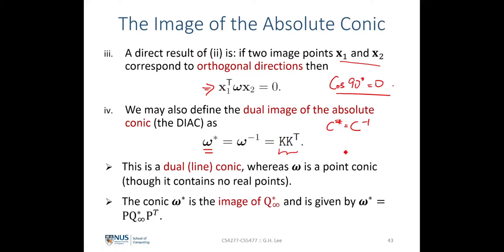The dual IAC omega-star = K*K-transpose follows the definition of the dual of a conic: the original conic is a point conic defined by points, while its dual is a conic defined by lines enveloping it. Although the IAC contains no real points and cannot be physically observed, the dual IAC omega-star is also equivalent to the image of the dual absolute conic Q-infinity-star on the plane at infinity, obtained directly by projecting that quadric with the projection matrix.